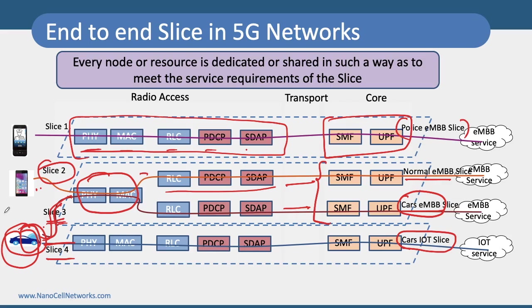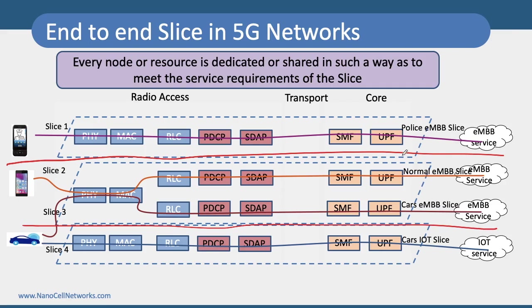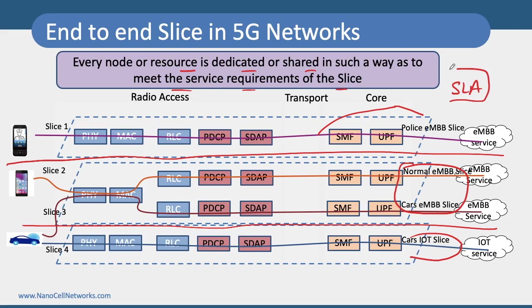This architecture gives a lot of flexibility in allocating radio resources. The same physical infrastructure is divided into multiple logical networks — for example, a public safety slice, a car IoT slice, and a normal eMBB slice. Every node or resource is dedicated or shared in a way that meets the service requirement of each slice. Operators will have defined SLAs for these slices, which can be sold to MVNOs, given to a mobile virtual network operator, or sold to customers such as police or industrial automation.